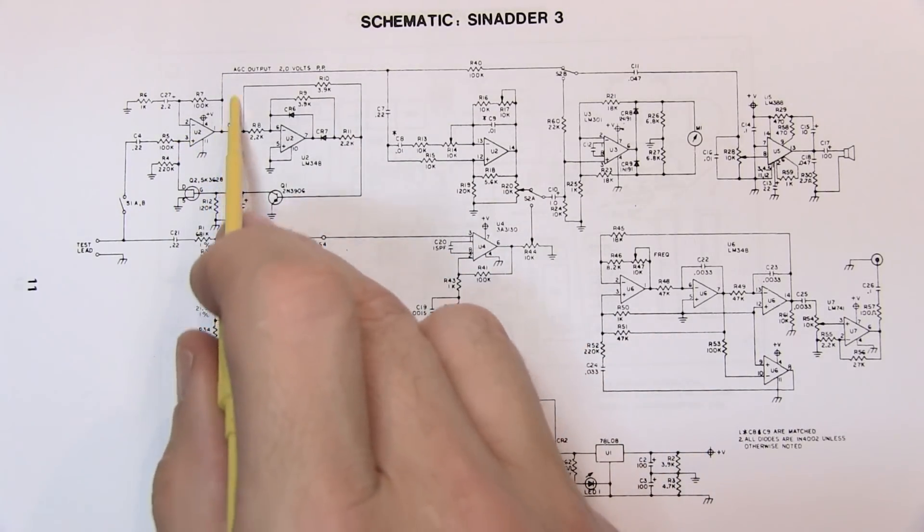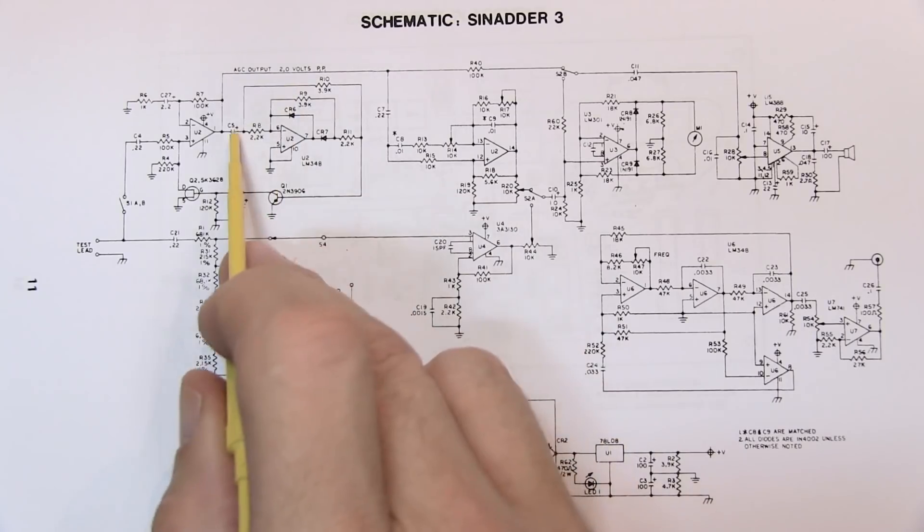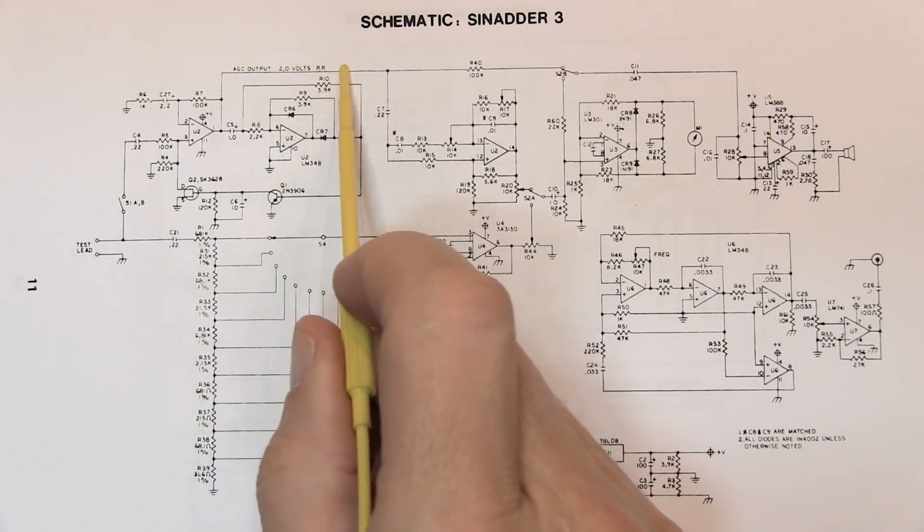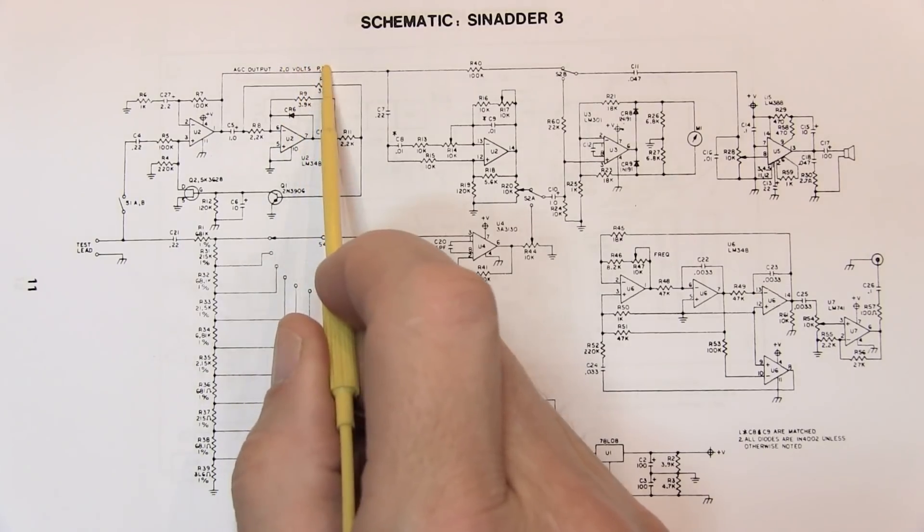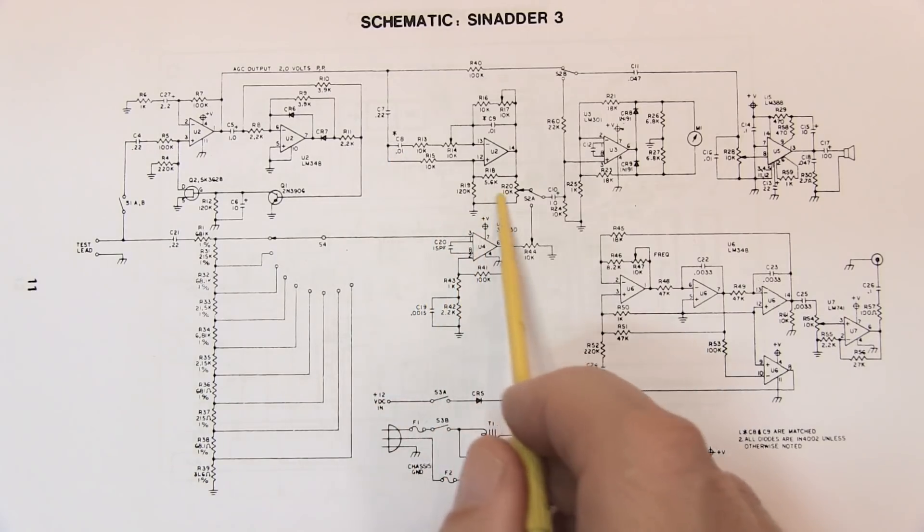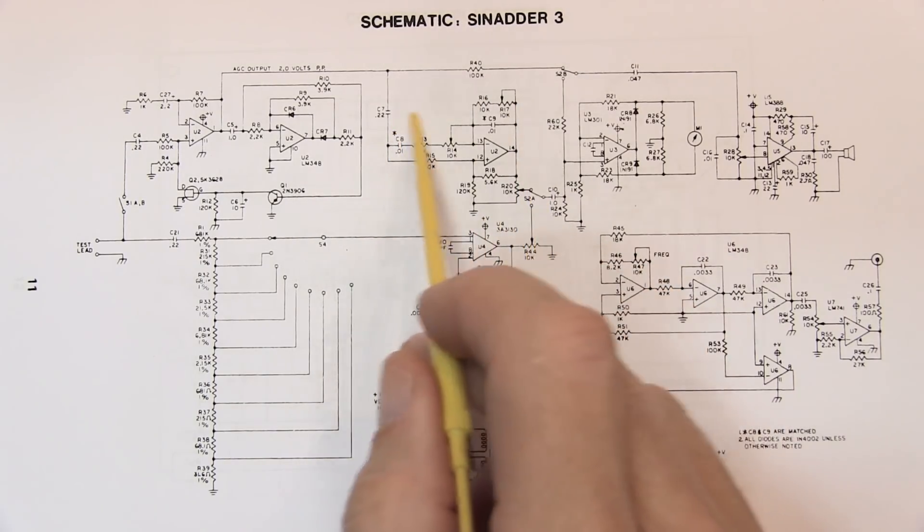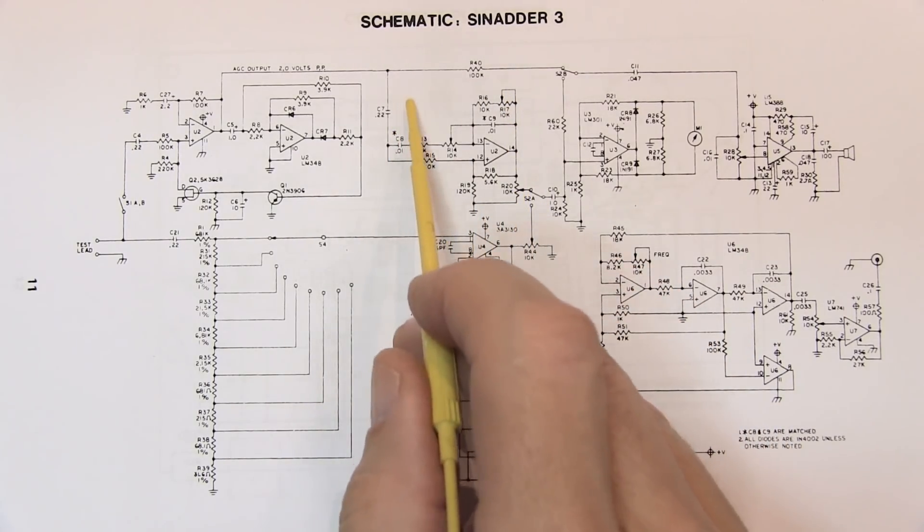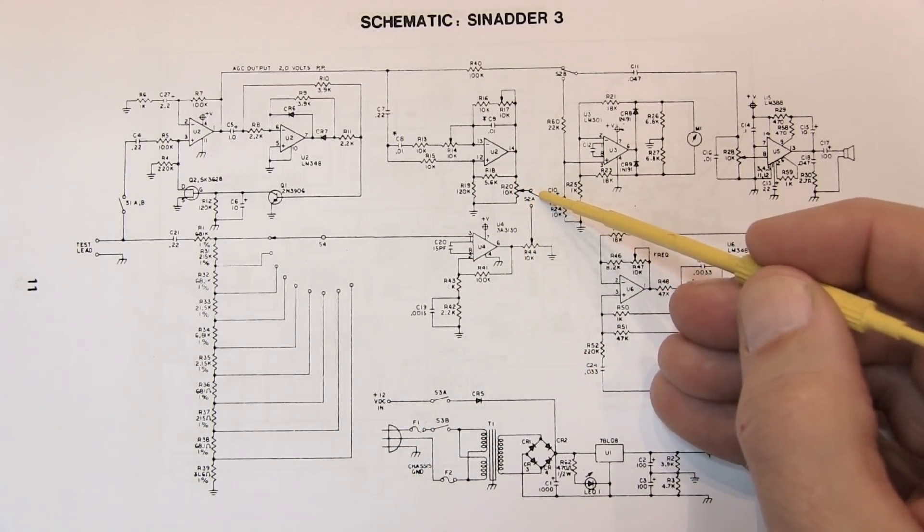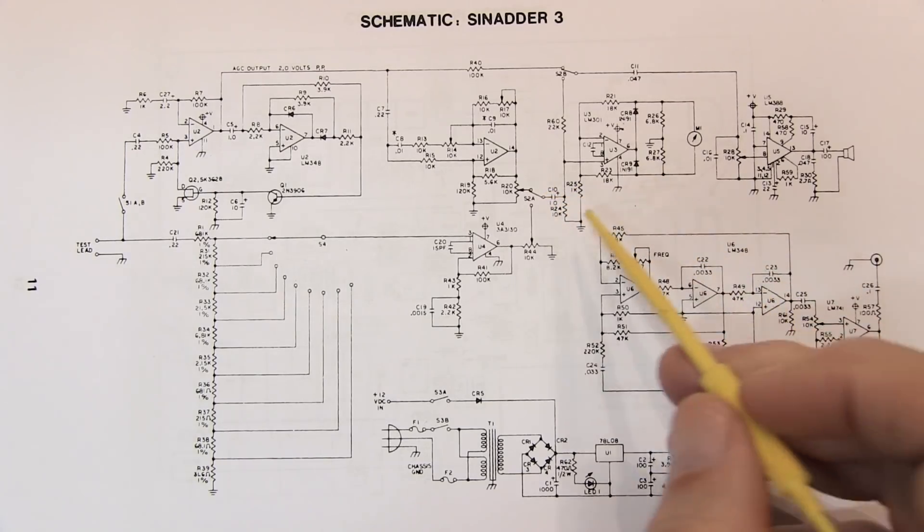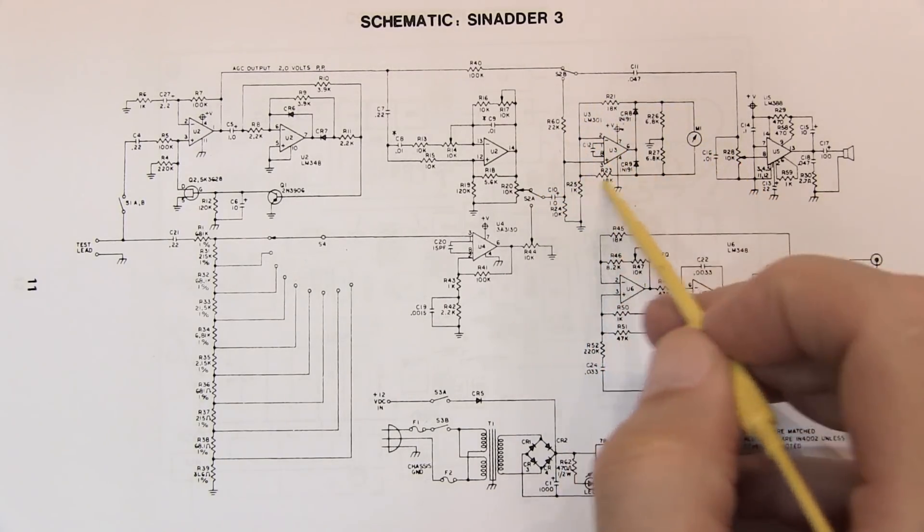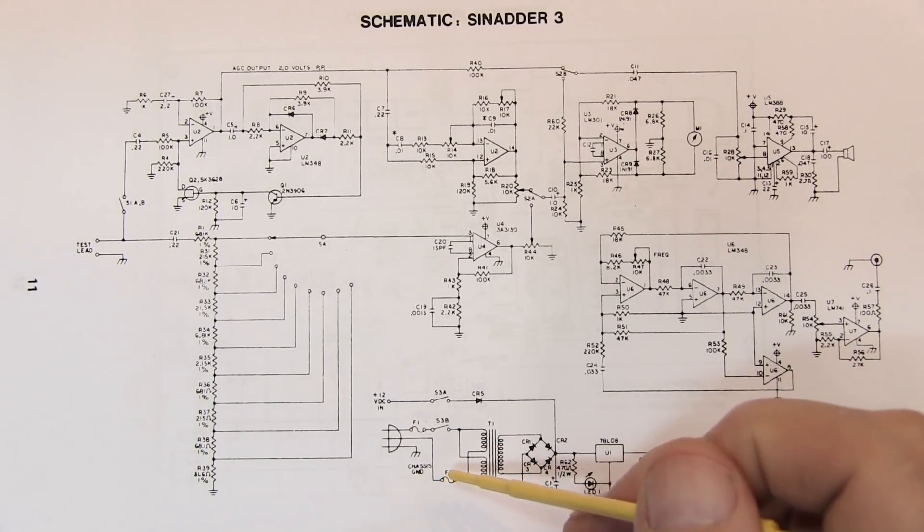And the loop is set up to provide a 2 volt peak-to-peak output from this AGC amplifier. So now the signal appearing here is 2 volts peak-to-peak that includes the signal, the noise, and the distortion. That then goes into this circuit, which is our 1kHz notch filter. So that removes the 1kHz signal component so that at the output of that we're left with just the noise and distortion components, which are then fed into our meter amplifier circuit to actually measure the resulting SINAD.